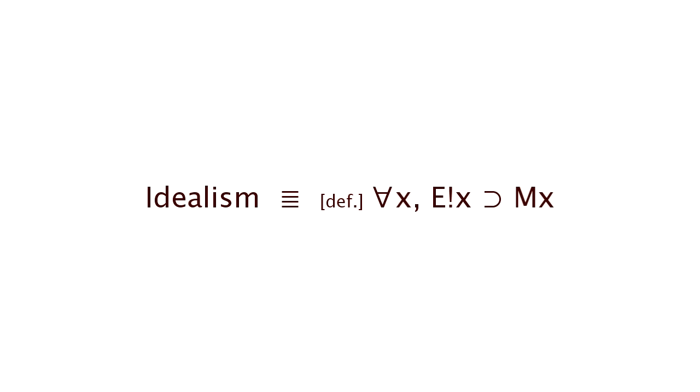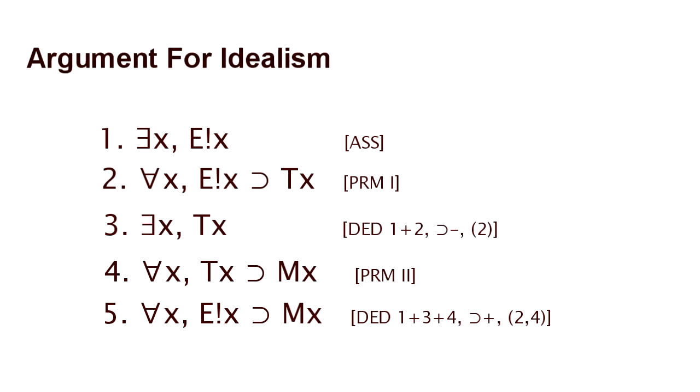A typical argument for idealism looks like this. The first line is the uncontroversial assumption that there is some X such that X exists. The second line is the first premise, which claims that, for every X, if X exists, then X is thought of. The third line is deduced from the first two, via modus ponens. It claims that there is some X such that X is thought of.